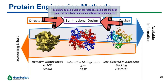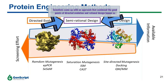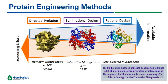Semi-rational design is kind of in between, because you still need a bit of information regarding the protein structure — for example, the sequence — but it allows you at the same time to reduce the screening effort. We call this technology saturation mutagenesis.